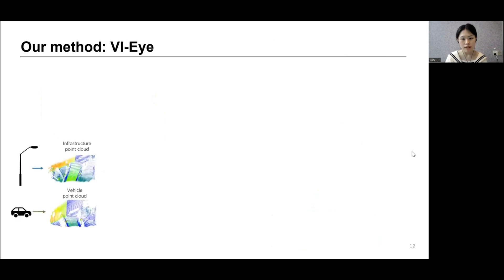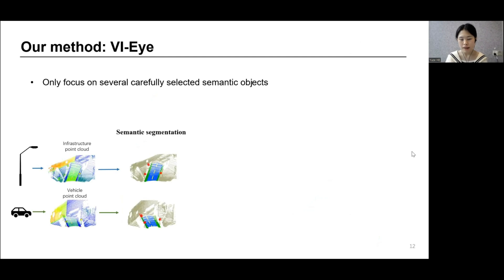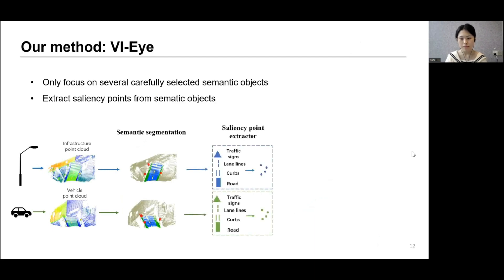To address the aforementioned challenges, we propose VII. Our core idea is to only focus on several carefully selected semantic objects and extract saliency points from them. By matching these saliency points, we can finally register vehicle and infrastructure point clouds.